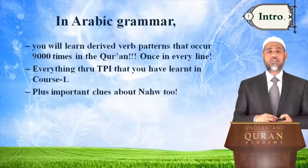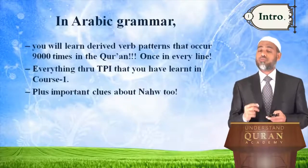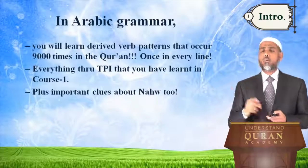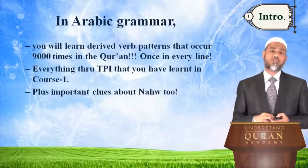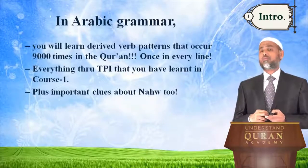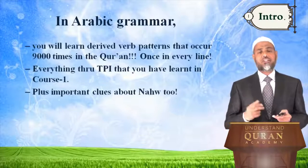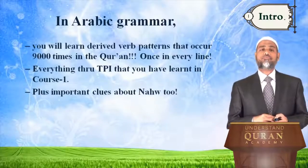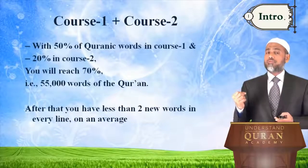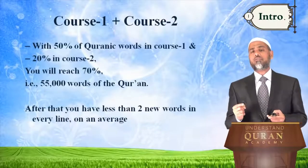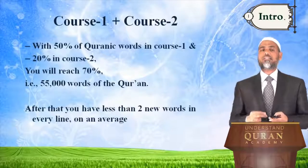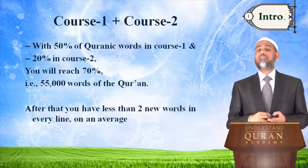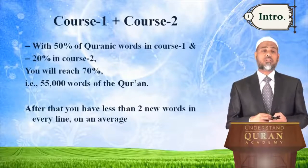In Arabic grammar in this course, you will learn derived verb patterns that occur 9,000 times in the Quran — almost once in every line of the Quran. And everything through TPI that you have learned in course 1, plus important clues about Nahf too. So with 50% of the Quranic words in course 1 and 20% in course 2, you will reach 70% — that is 55,000 words of the Quran.